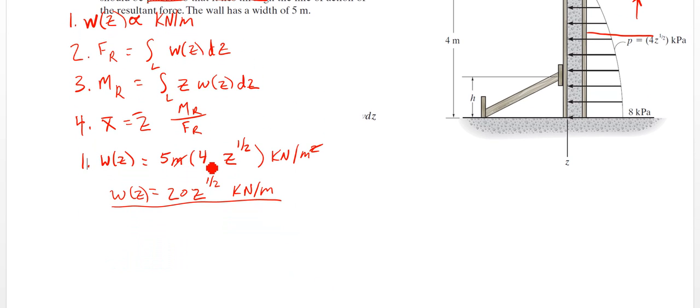Then we're going to integrate that. So step 2, F of R is going to be the integration over L, so 0 to 4 of 20z to the 1 half dz. So again, integration means we're going to increase this power by 1 and divide the multiplication term by that whole amount.